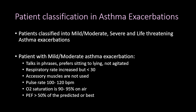For mild to moderate asthma exacerbation: the patient talks in phrases, can complete a whole sentence without taking a breath, prefers sitting to lying, and is not agitated. Respiratory rate is increased but less than 30, accessory muscles are not used, pulse rate is 100 to 120 beats per minute, oxygen saturation is 90 to 95% on air, and peak expiratory flow rate is higher than 50% of predicted or their personal best.